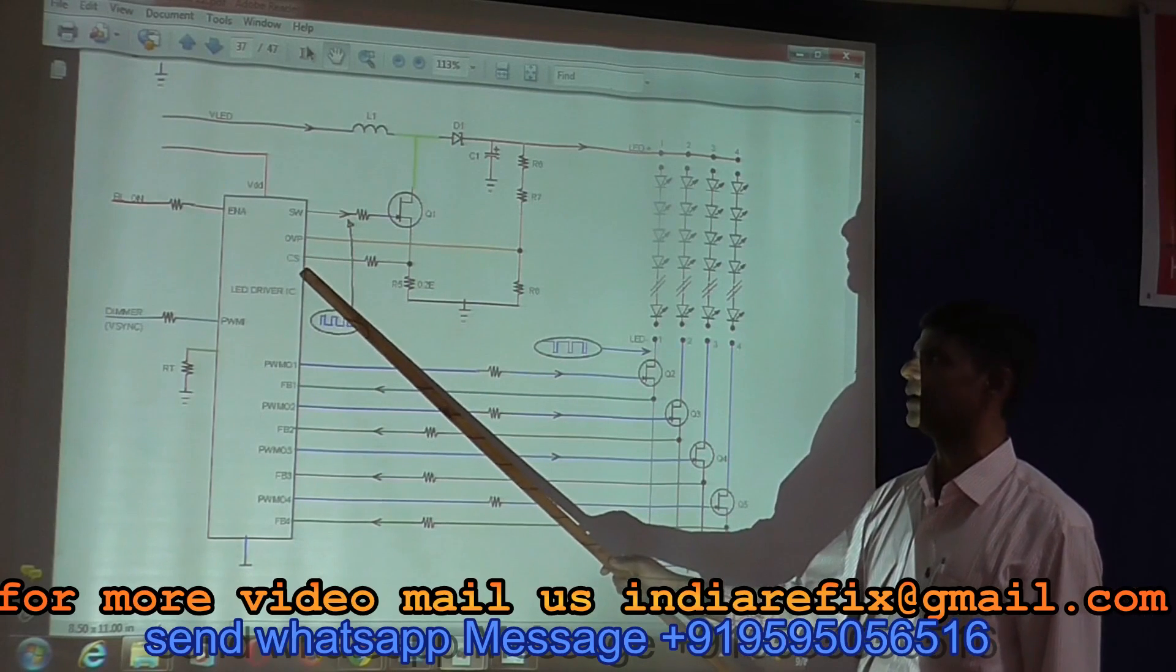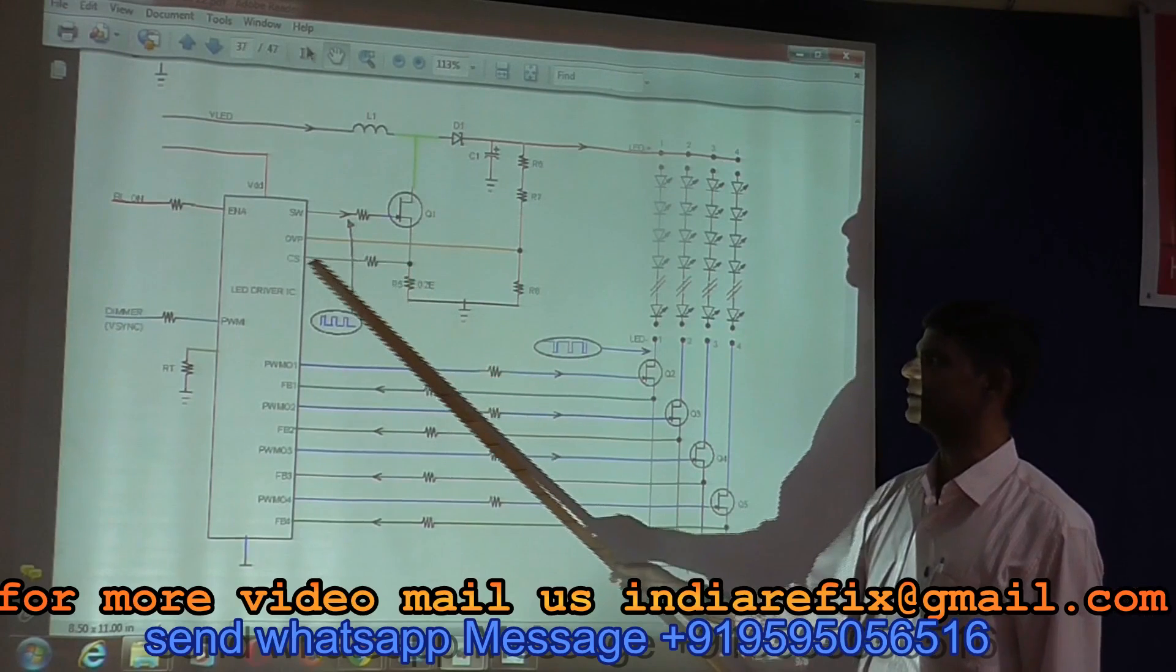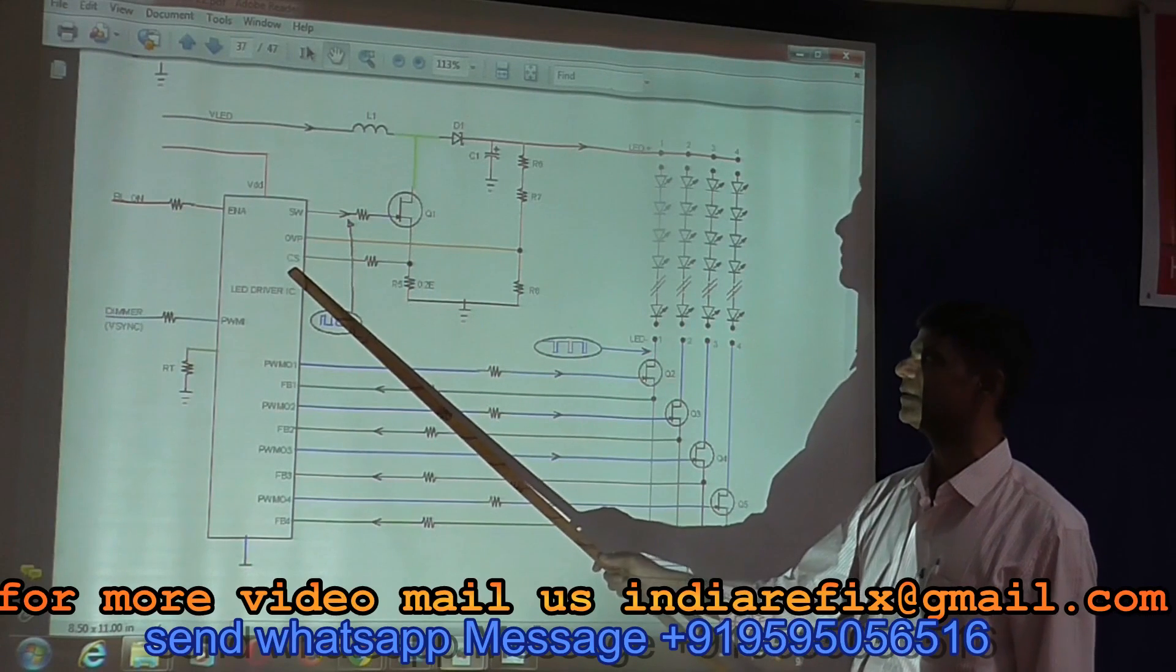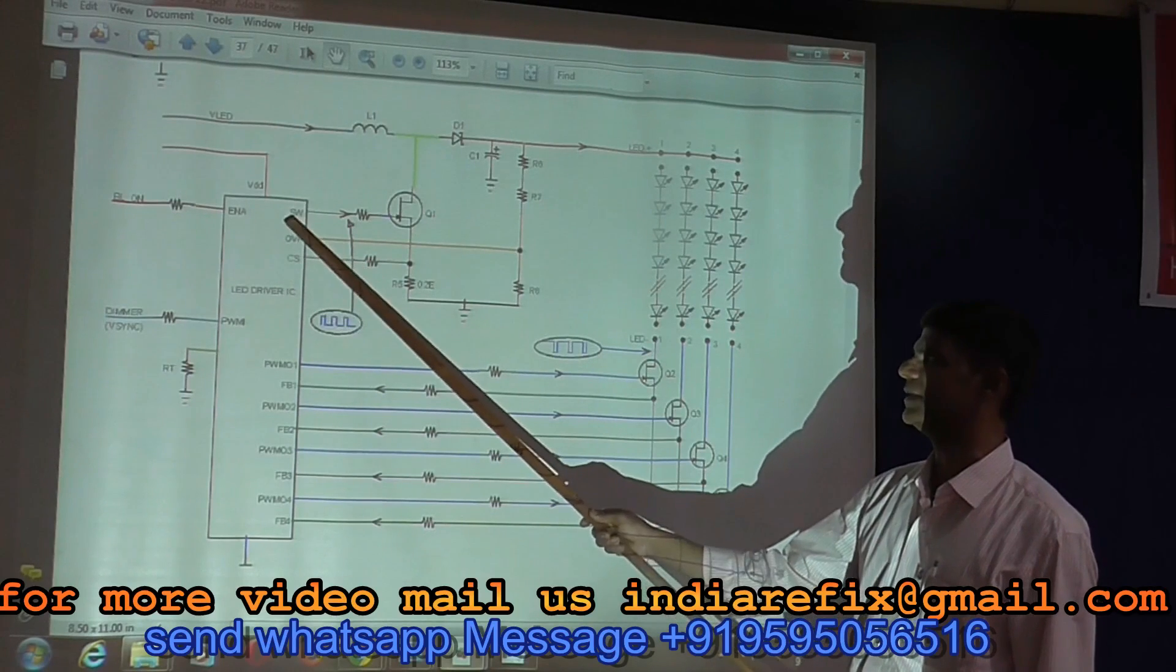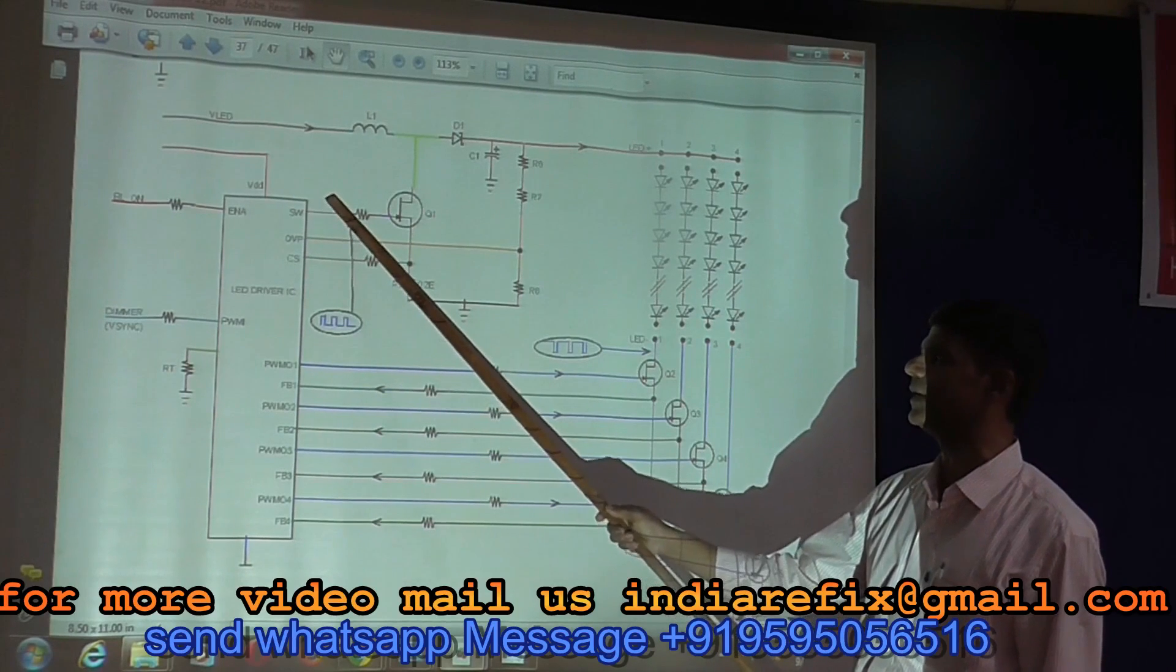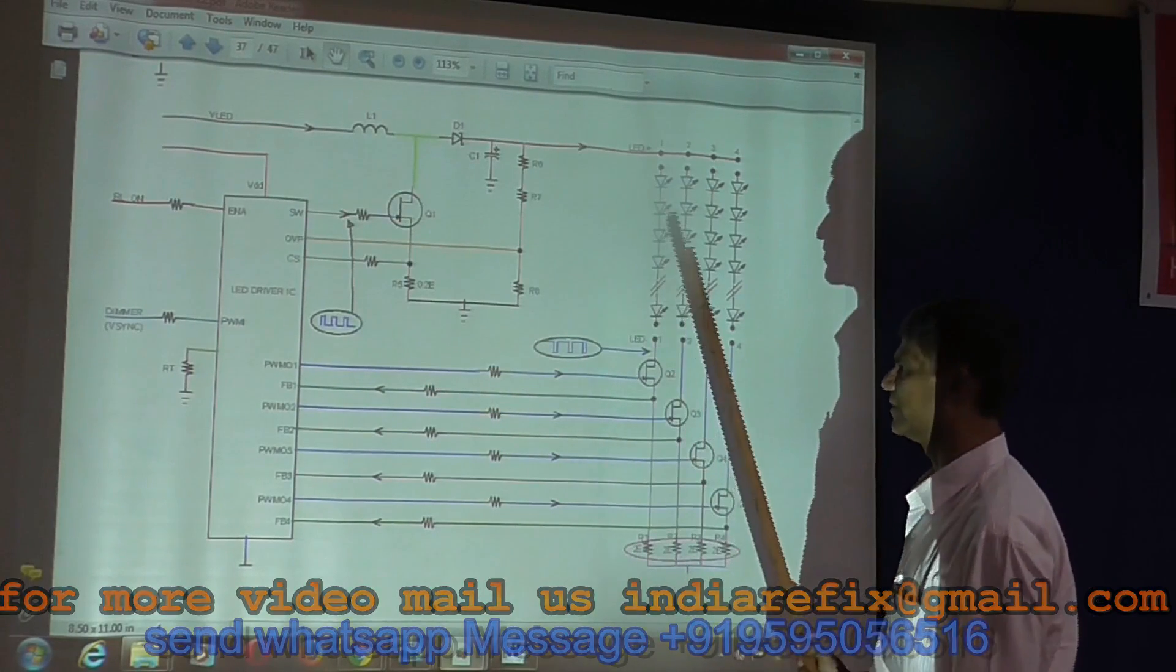CS stands for current sense. If voltage at this pin increases, similar to over voltage protection, similar action is taken and the IC stops outputting its PWM pulses. This is how this circuit works.